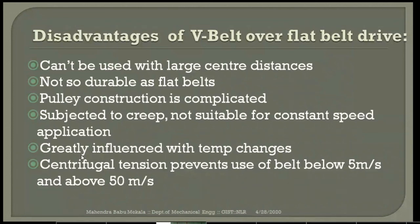Another disadvantage is that centrifugal tension limits the use of V-belt to a speed range of 5 meters per second to 50 meters per second. Since the belt runs at high speeds, the centrifugal tension will be higher, and the speed has a limitation within this range. These are the main disadvantages of V-belt over flat belt — there are 5 to 6 main disadvantages.